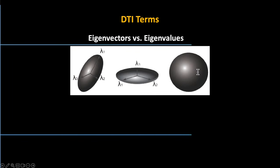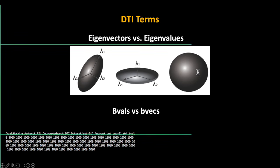So we'll talk a little bit about tensors and then get into the practical session. With all of that in mind, we're going to use all the data about the signal loss — how much it is decreasing. I talked about BVALs, and I'm also going to talk about BVECs, which is the other file you automatically get when you acquire diffusion images.